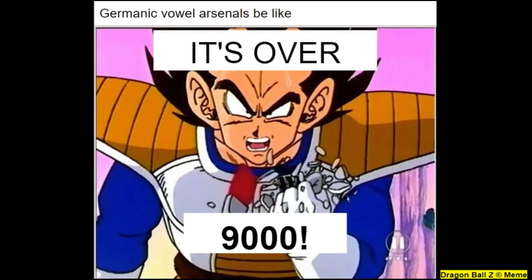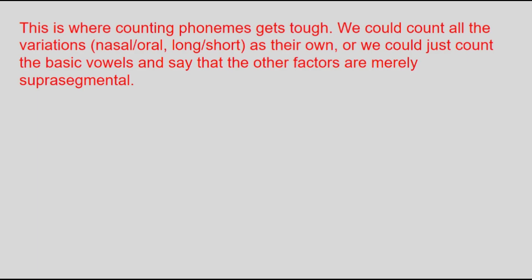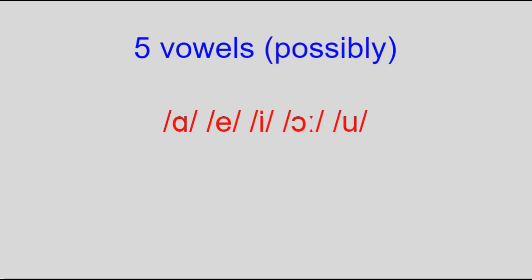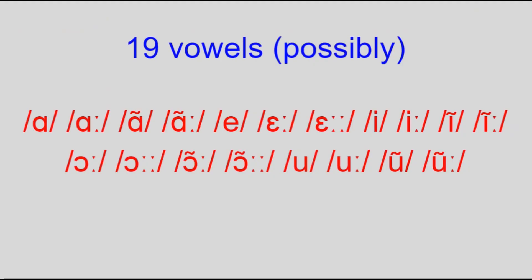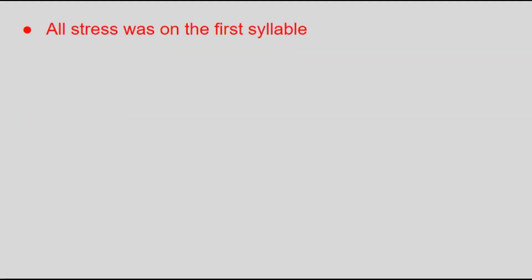Now for vowels. If you've been on this channel before, you're probably aware that Germanic languages today tend to have large vowel arsenals. The same can be true of Proto-Germanic, depending on how many vowels you count as their own. There are only five basic vowels — a, e, i, o, and u — but all the vowels had length distinction, and most had nasality distinction as well. The vowel e had a three-way length distinction between short, long, and overlong, while o didn't even have a short variant. This gives us 19 total vowels. Finally, all stress was on the first syllable.